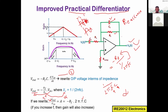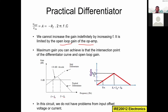The maximum gain achievable is at the intersection point of the differentiator curve and the open-loop gain. The differentiator curve crosses the 0 dB line at two points, corresponding to two frequency levels — the lower cutoff frequency and the upper (higher) cutoff frequency.